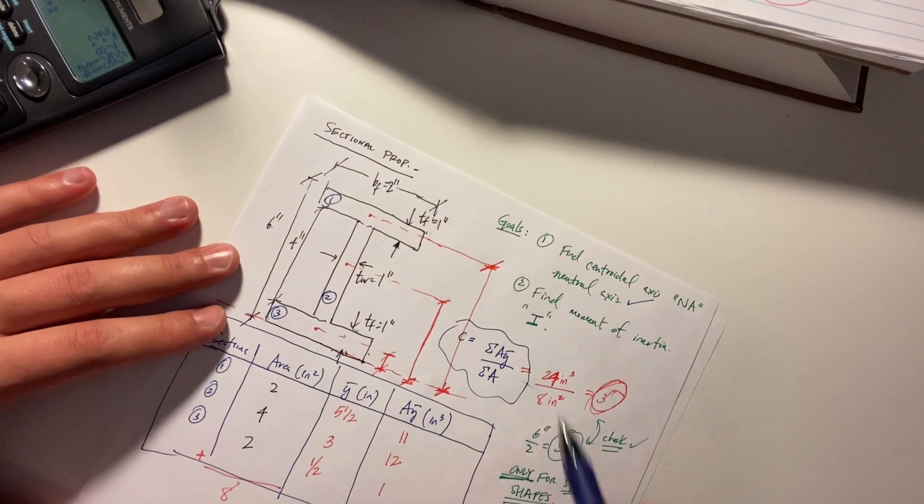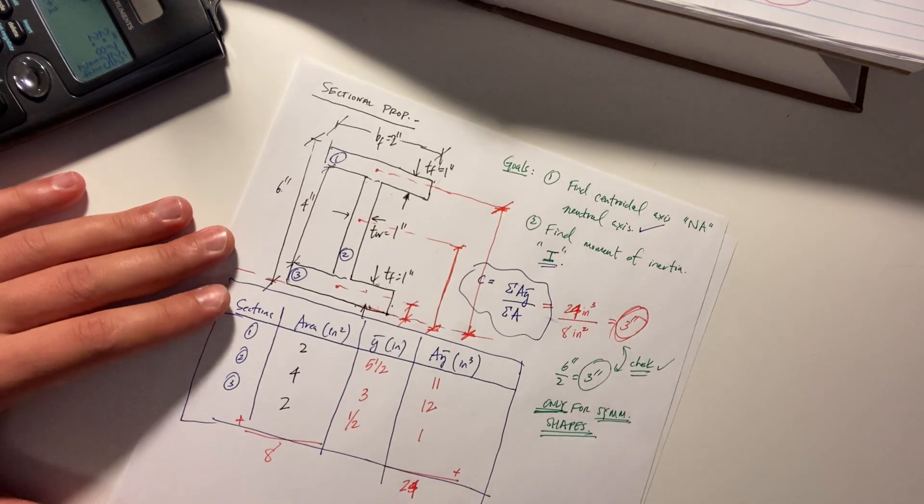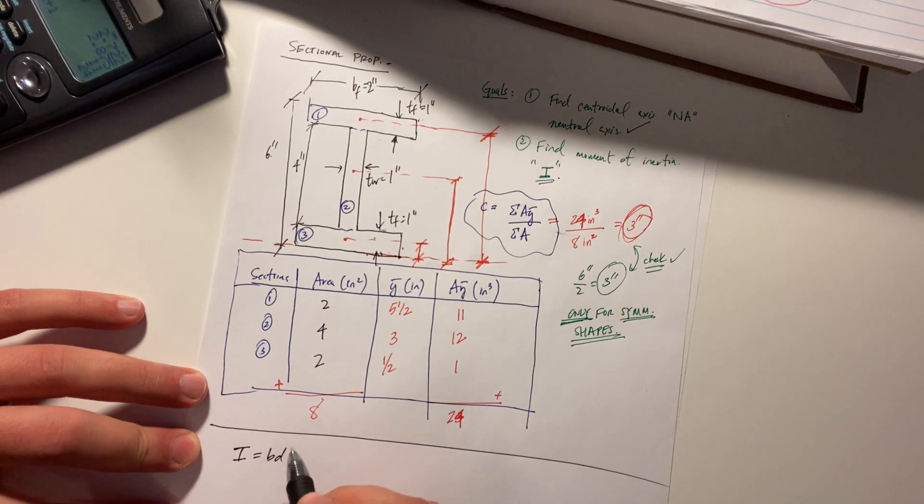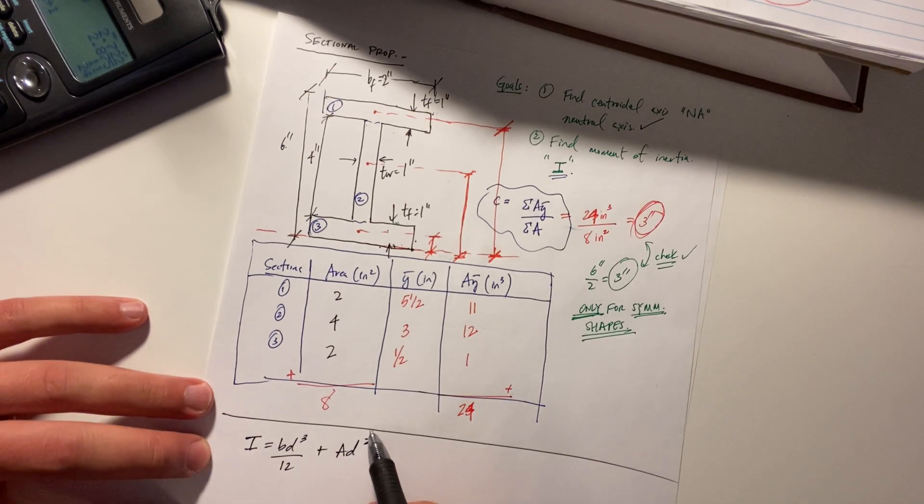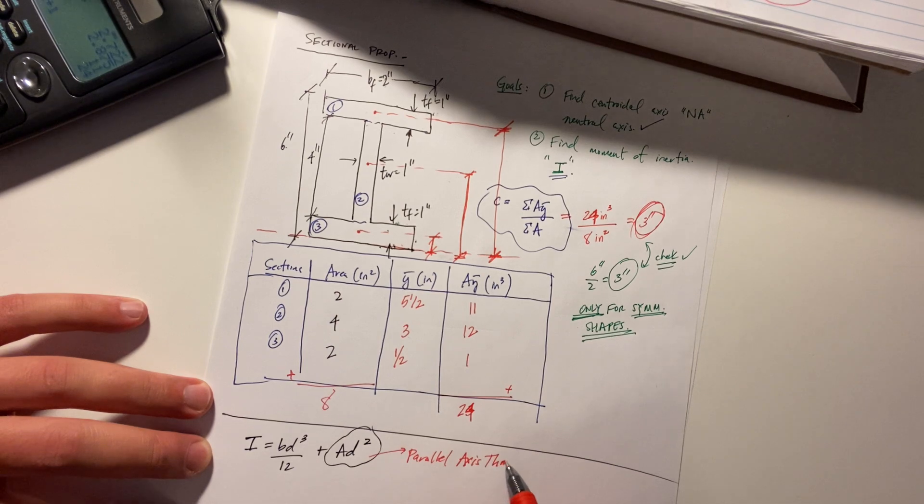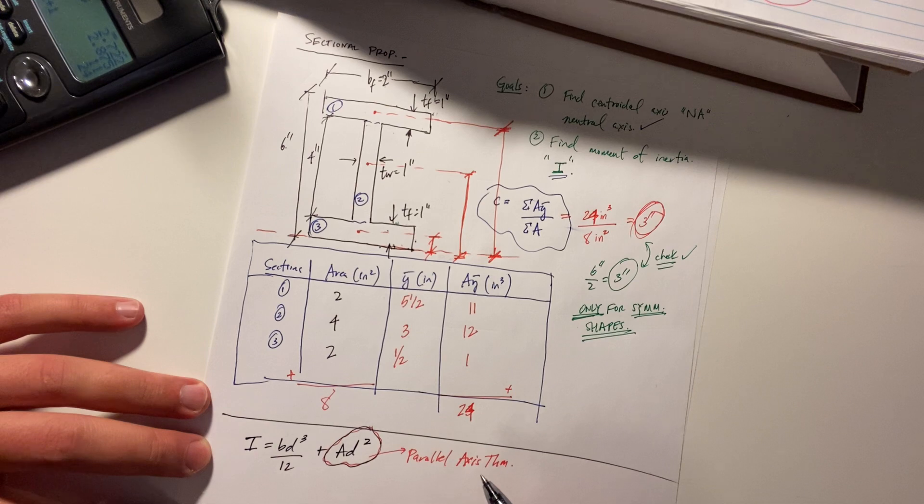All right so that's our first goal done moment of inertia what's that that looks pretty scary I wonder what that is turns out it's pretty easy bd cubed over 12 plus ad squared please don't ever forget the ad squared this is called the parallel axis theorem it makes a lot of sense if you crack open a textbook and you read about the mathematics involved it makes a lot of sense but without getting all calculus-y it'll make sense when kind of break it down too